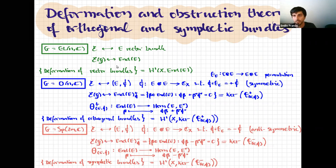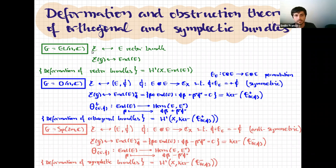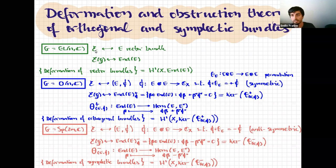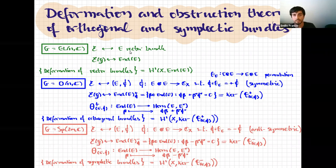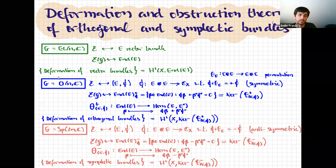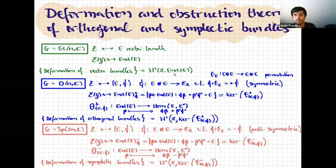In the case of GL(n,C), the principal bundles are completely determined by the vector bundles, and the adjoint bundle is nothing more than the endomorphism bundle associated to this vector bundle. So the deformation of vector bundles is given by the H1 of the endomorphism bundle.